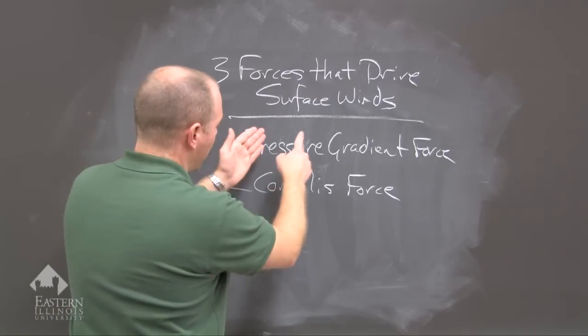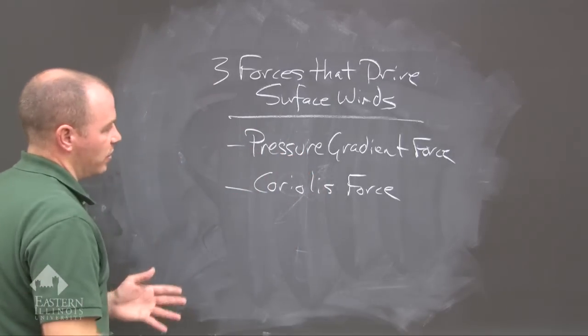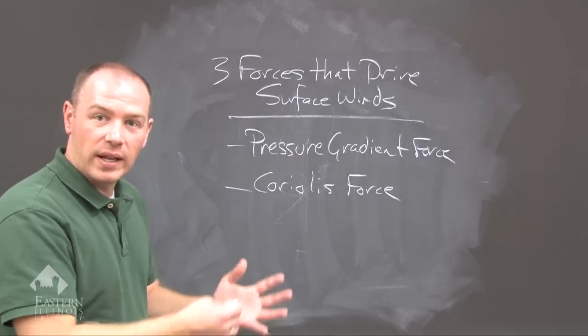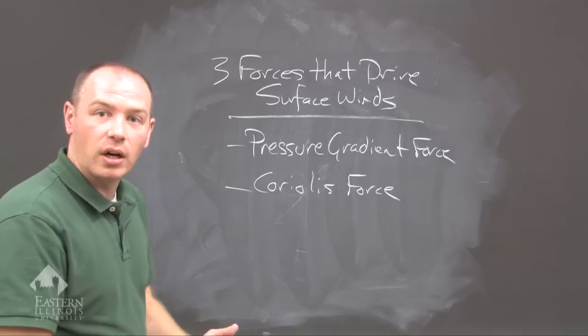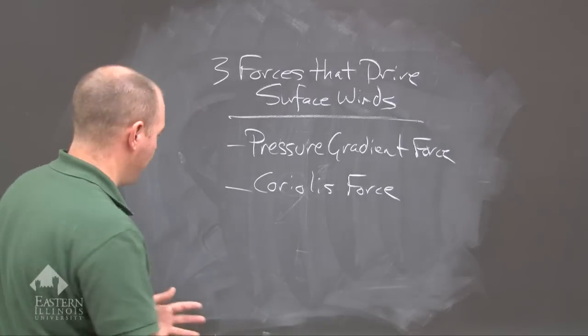When we take these two forces and add them together, we get winds that are flowing across isobars to the right.